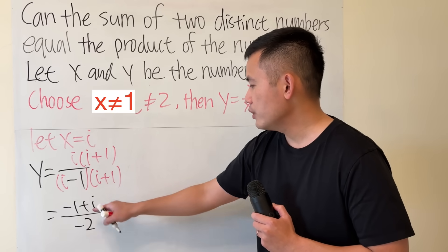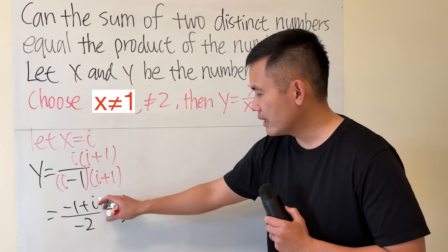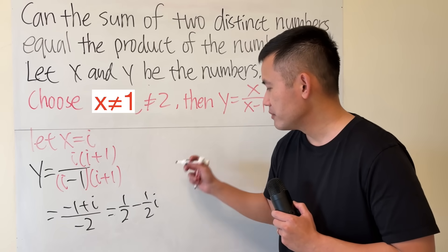Split the fraction, we get positive 1 half minus, let me write it as 1 half i.